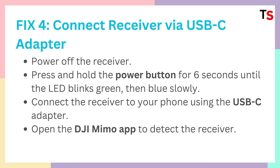Fix 4 is connect receiver via USB-C adapter. Power off the receiver first. After that, press and hold the power button for 6 seconds until the LED blinks green, then blue slowly. Make sure the LED starts blinking green and then turns into blue slowly. After that, connect the receiver to your phone using the USB-C adapter and USB-C cable. Then open the DJI MIMO app to detect the receiver and connect it.